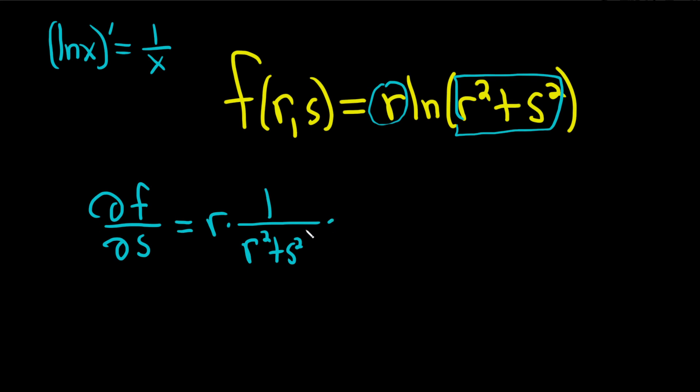So again, the r's are constants, so the derivative of r squared is 0, and then the derivative of s squared will be 2s. So we just get 2sr over r squared plus s squared.